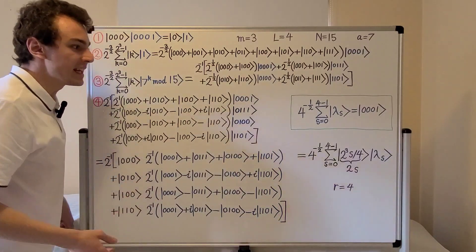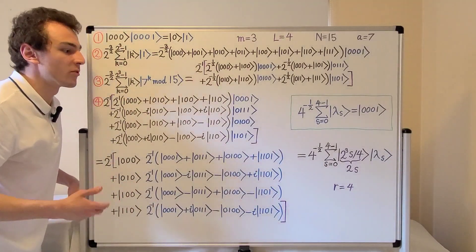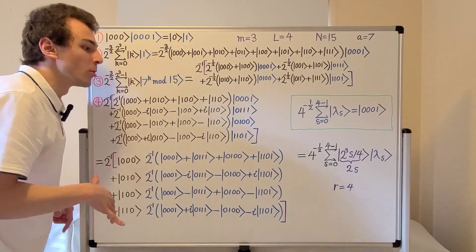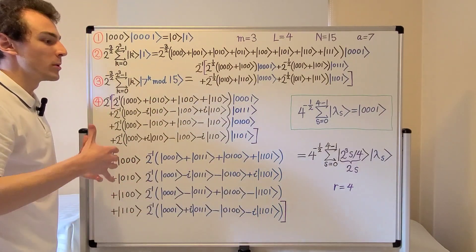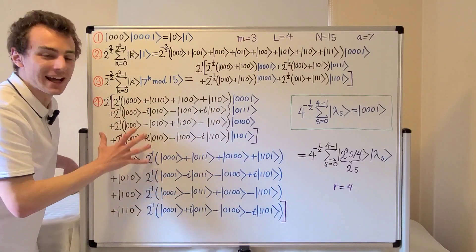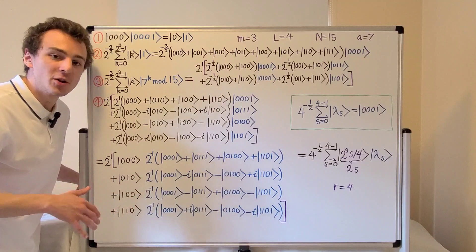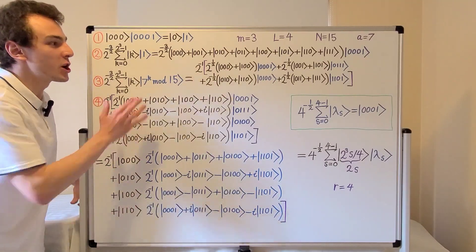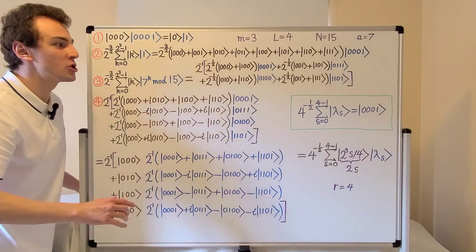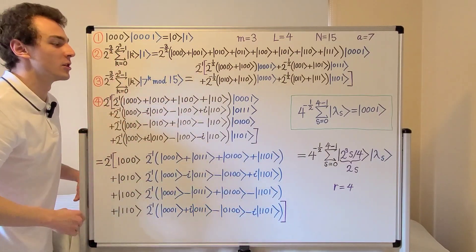So now we have seen examples of the quantum order finding algorithm, and these are very neat examples. In general, the examples that we will see in later videos are not going to be as neat as these. But you can use these videos as a reference to see what's going on in the procedure, and now you have specific examples and not just general expressions with summation notation.